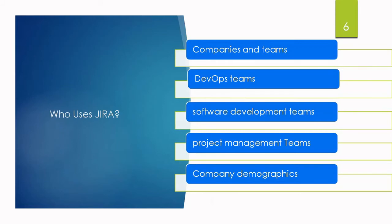Companies and teams are also using Jira. It was launched in 2002 as an issue tracking and project management tool. Since then, over 65,000 plus companies globally have adopted Jira for its flexibility to support any type of project and its extensibility to work with thousands of apps and integrations. More than 65,000 organizations have already adopted and are using it — teams of two to 2,000 in companies of all sizes.